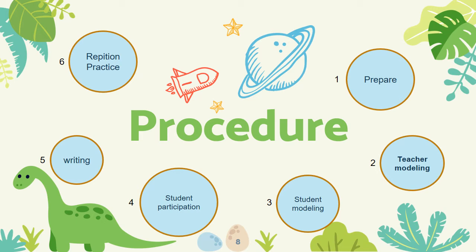The third step is Student Modeling: students volunteer to mimic the same gestures or body movement. The fourth step is Student Participation: all students mimic the same body movement, and teachers ask them to say the word as they are making the movement.